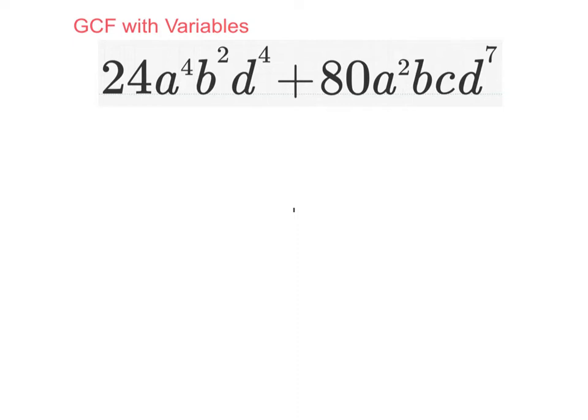Did you pause and solve? Okay, for the straight number part, 8 is the GCF of 24 and 80. Now taking each variable separately, for a, there are two factors of a in each term, a squared.